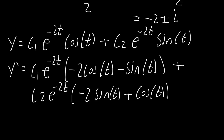With t equal to 0: sine 0 is 0 so that term vanishes, cosine 0 is 1, and e raised to 0 is 1. Since y equals 1, we get 1 equals c1 — because that term produces 1 and the sine term is 0. So c1 equals 1.